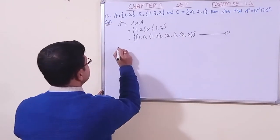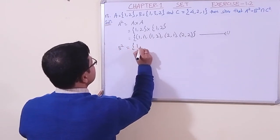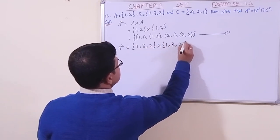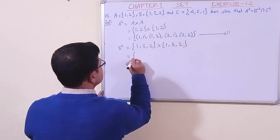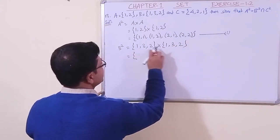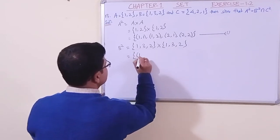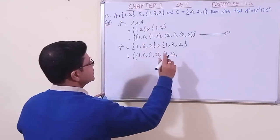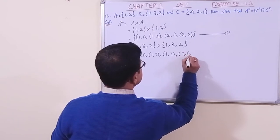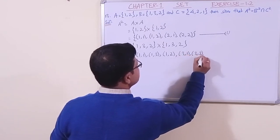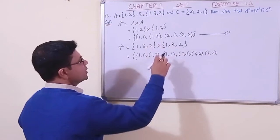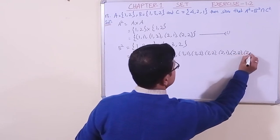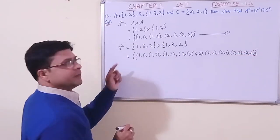Then B square: {1, 3, 2} cross {1, 3, 2}. Now we shall make ordered pair: 1 with 1, 1 with 3, 1 with 2, like this. (1,1), (1,3), (1,2), (3,1), (3,3), (3,2), and 2 with 1, 2 with 3, 2 with 2. So (2,1), (2,3), (2,2). In this way we have done B square.